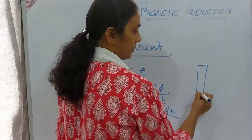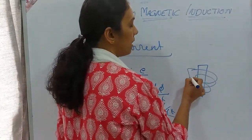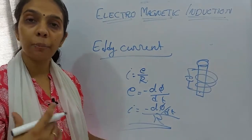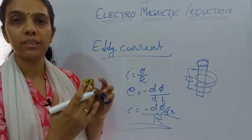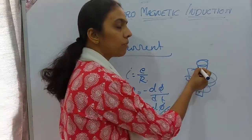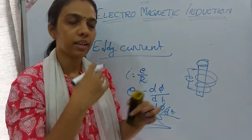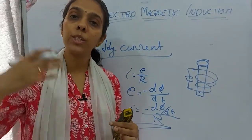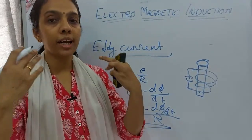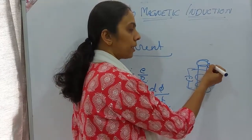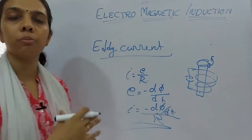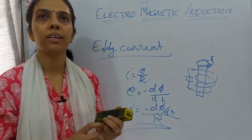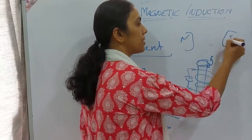An example: if an electromagnet is present and we place a metallic disc over it, when we switch on the electromagnet, a large current passes through it and an EMF is induced. By Lenz's law, the induced EMF opposes its cause and creates a repulsive force, causing the metal disc to move upward. This is one effect of eddy currents.